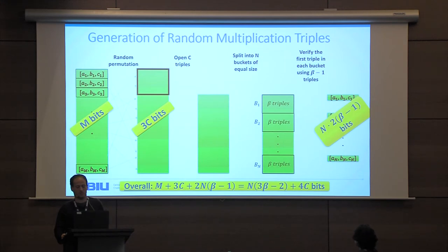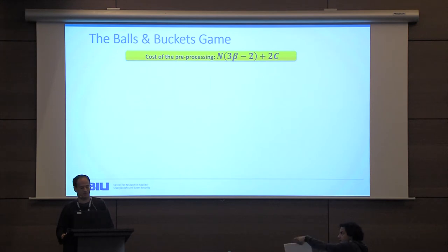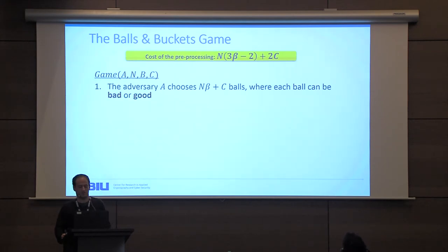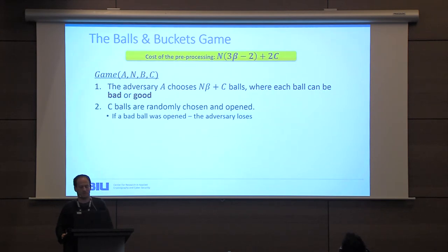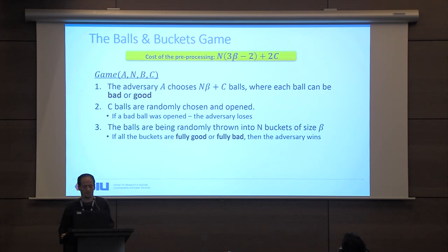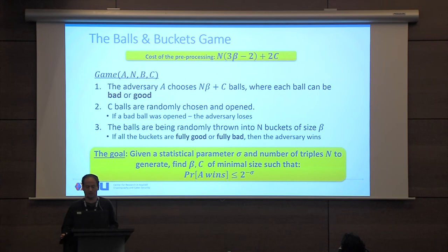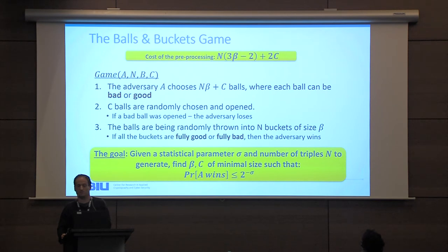As we increase these parameters, the probability that the adversary wins decreases, but the cost increases. This process can be viewed as a combinatorial game: an adversary chooses n·beta + c balls — each ball is a multiplication triple — and c balls are randomly opened; if a bad ball is opened, the adversary loses. The remaining balls are randomly thrown into n buckets of size beta, and the adversary wins if and only if all buckets are fully good or fully bad. Given a statistical security parameter sigma and a number of desired output triples n, we want to find beta and c of minimal size such that the adversary wins with probability less than 2^{-sigma}.